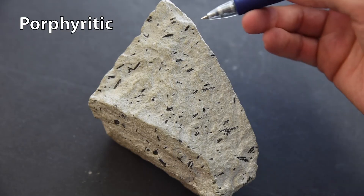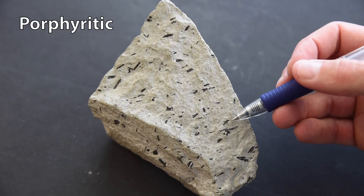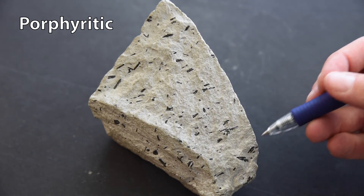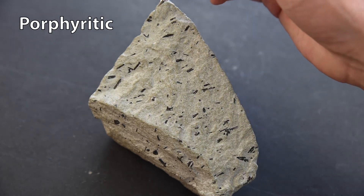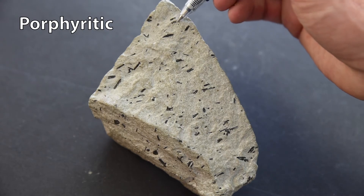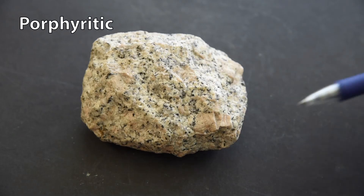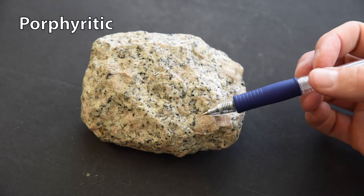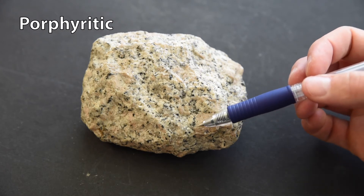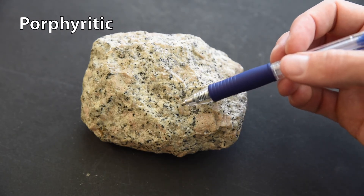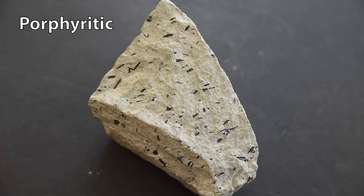Porphyritic rocks have two distinct crystal sizes present — either large macroscopic crystals within an aphanitic groundmass for extrusive rocks, or noticeably larger crystals within a phaneritic matrix for intrusive rocks. These larger crystals are called phenocrysts. Rocks with a porphyritic texture record a two-stage crystallization history: slow at first, allowing the phenocrysts to form, then less slow or rapid, resulting in the remaining melt forming much smaller crystals.